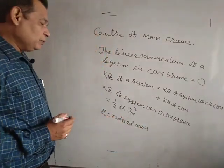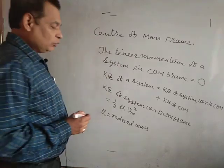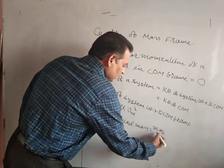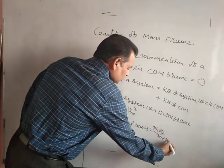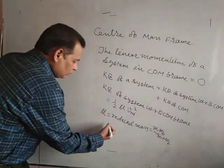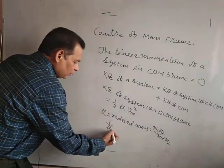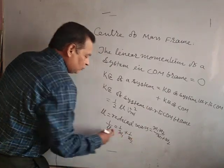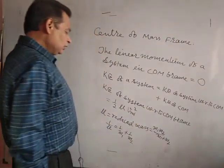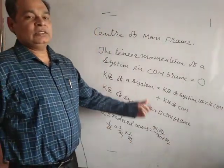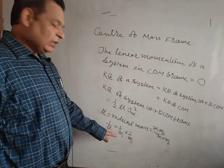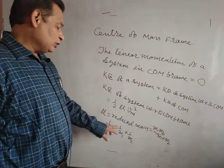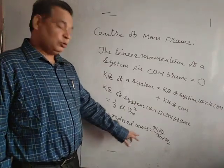What is the meaning of reduced mass? For a system of two bodies or two particles, reduced mass mu equals M1·M2 divided by (M1 + M2). For more than two bodies, we can write 1/mu = 1/M1 + 1/M2 + 1/M3. But here we are discussing the two-particle system.